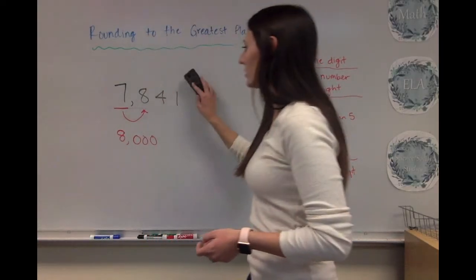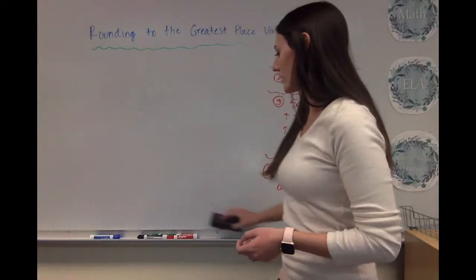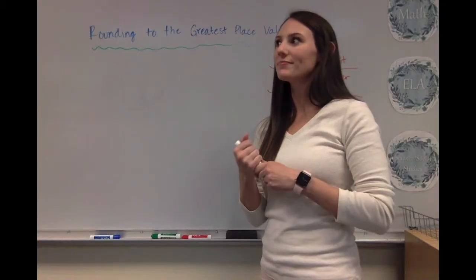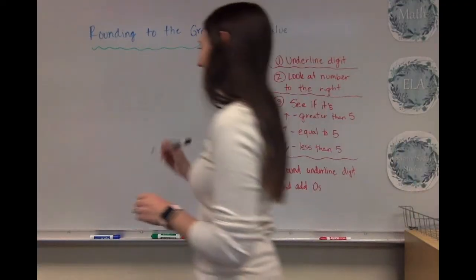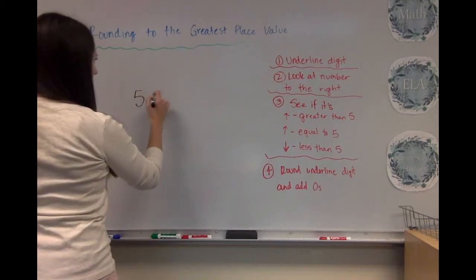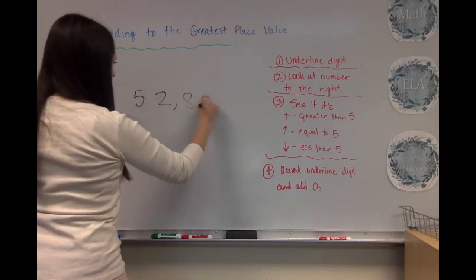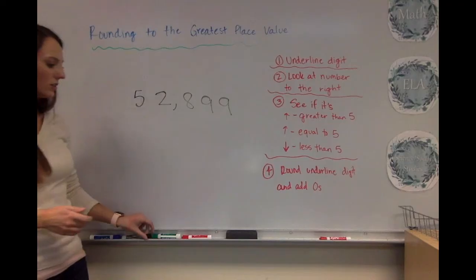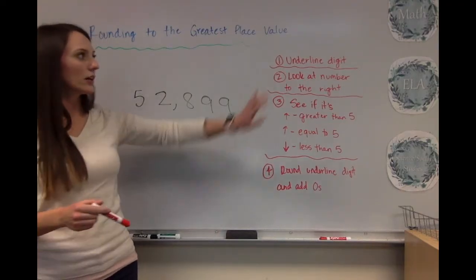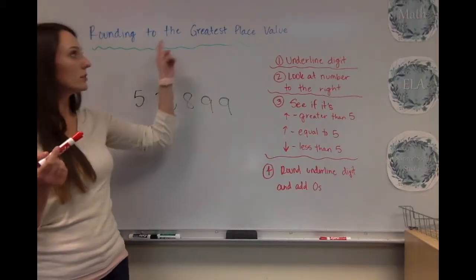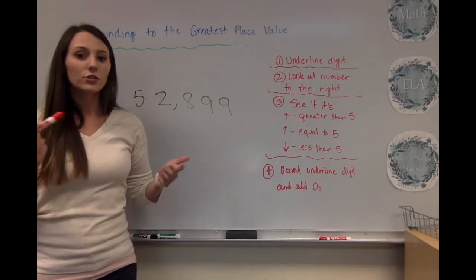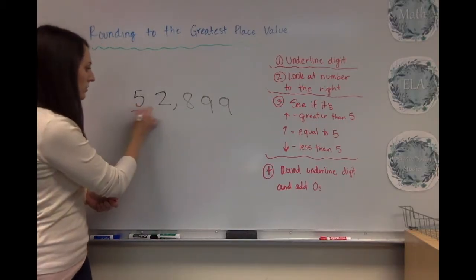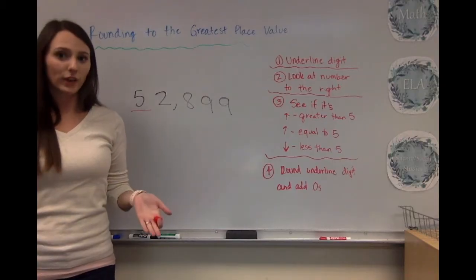Okay, so let's do another number. And let's make it a little bit bigger this time. We're going to do 52,899. Okay, write it down at home. Okay, 52,899. So let's follow our procedure here. First, we're going to underline the digit that we're looking at. And we're just doing the greatest place value. We're not doing a specific digit. So we're going to do the number that's in the greatest place value, which would be right here. This is our 10,000th spot and a 5 is in it.